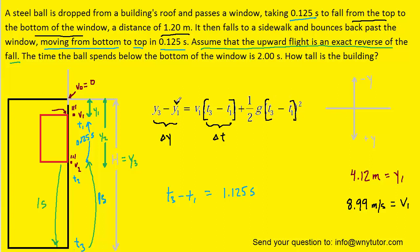Also, we earlier calculated Y1. That was the 4.12 meters. So we can plug that in for Y1, and that's going to allow us to be able to solve for Y3, which if you look back at the picture is exactly what we're looking for. Y3 represented the height of the building.